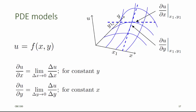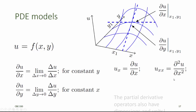In this diagram, the partial derivative of the dependent variable u with respect to x at x1 and y1 is the slope of the tangent line to the surface in the x direction at x1 and y1, and the partial derivative of u with respect to y at x1 and y1 is the slope of the tangent line in the y direction at x1 and y1. You're familiar with these definitions of the partial derivatives from your study of calculus. The partial derivatives are sometimes also annotated u sub x for the first partial derivative of u with respect to x, or u sub xx for the second partial derivative of u with respect to x.